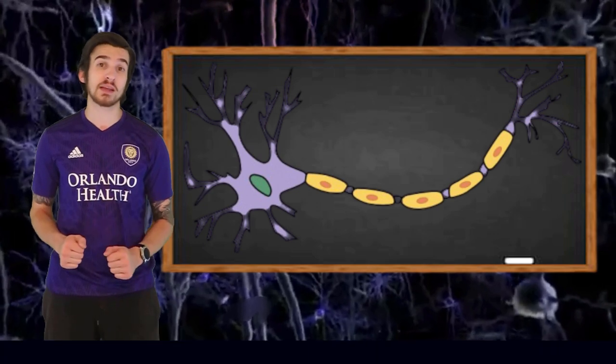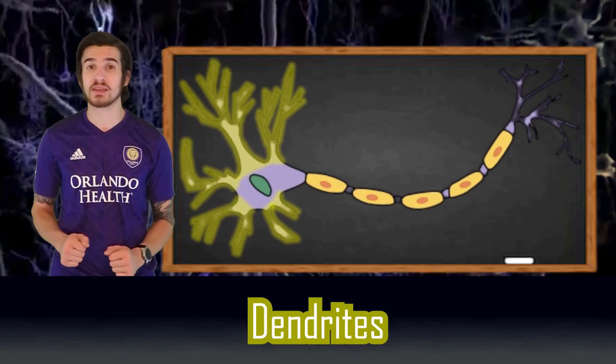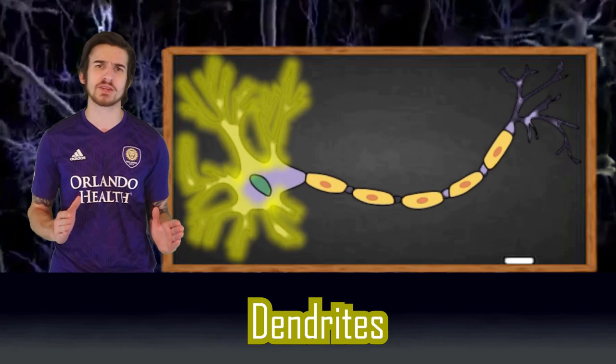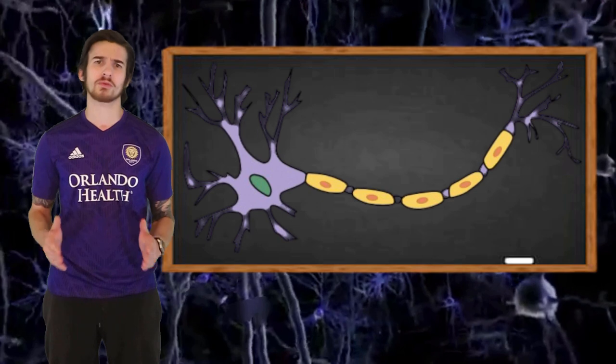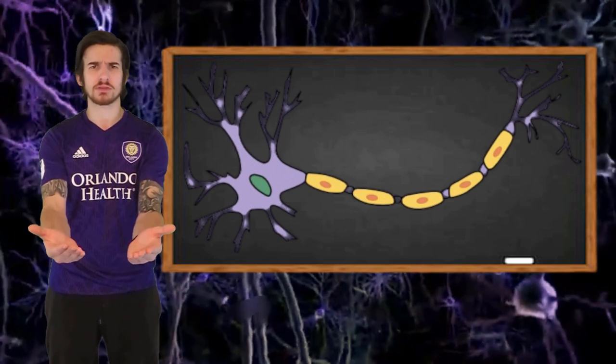Branching off of our cell body, we have our dendrites. Dendrites play the important role of receiving information from other neurons. I like to look at the dendrites as the arms and hands of the neuron, sort of reaching out and receiving the message.